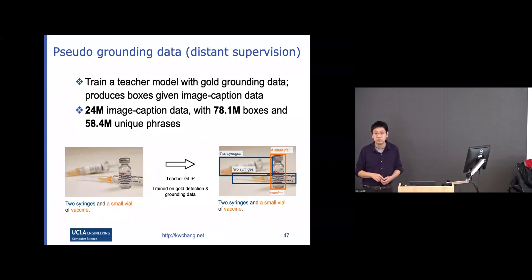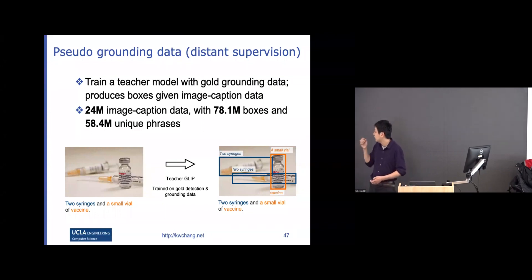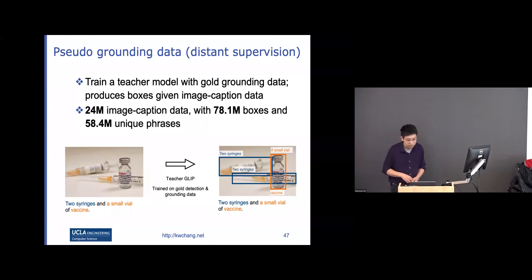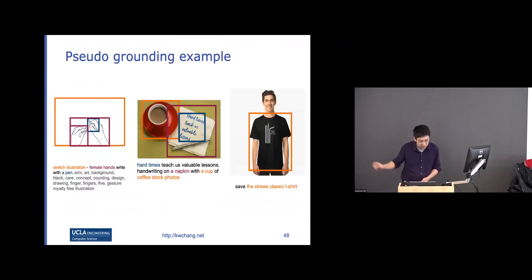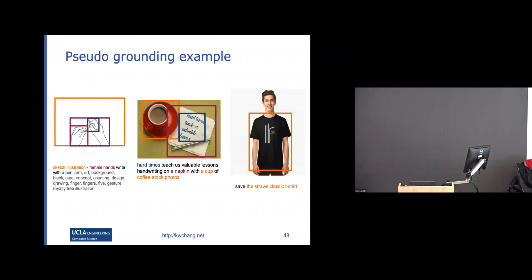This is the pseudo-grounding data we generate. Not every alignment is correct — for example, some phrase gets incorrectly aligned — but most of the time it generates pretty good bounding boxes, based on the reasonable assumption that objects mentioned in captions are mostly present in the image.